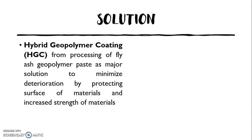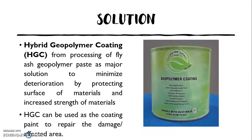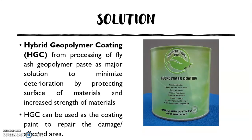As a solution, we produced the Hybrid Geopolymer Coating, or HGC, from processing fly ash geopolymer paste. It is the major solution to minimize deterioration by protecting the surface of materials, increasing material strength, and it can also be used as a coating paint to repair damaged and affected areas. On the right side, you can see our product — the Hybrid Geopolymer Coating.